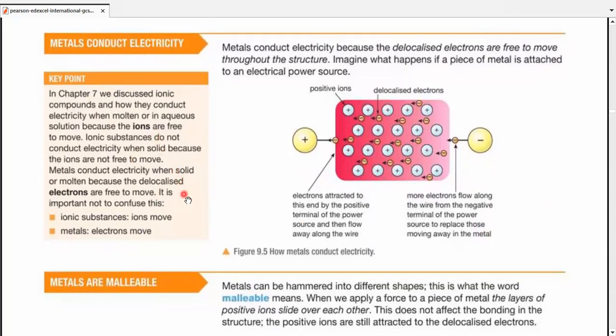Now in chapter 7 when we were discussing ionic compounds and how they conduct electricity, we were talking about ions are free to move in the molten or aqueous solutions of ionic substances. They do not conduct electricity when they are solid because the ions are not free to move. Metals on the other hand conduct electricity in solid or molten because the delocalized electrons are free to move in both the states. It's important that you do not confuse them that ionic substances have ions that carry the charge and move because of which they become conductors in this specific state.